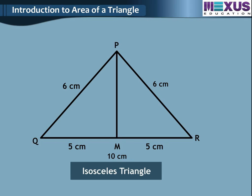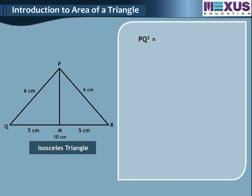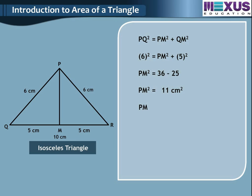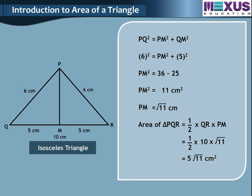By using Pythagoras theorem, PQ square equals PM square plus QM square. So 6 square equals PM square plus 5 square. Therefore PM square equals 36 minus 25, equals 11 cm square. Hence PM equals root 11 cm. Now, area of triangle PQR equals half into QR into PM, equals half into 10 into root 11, equals 5 root 11 cm square.